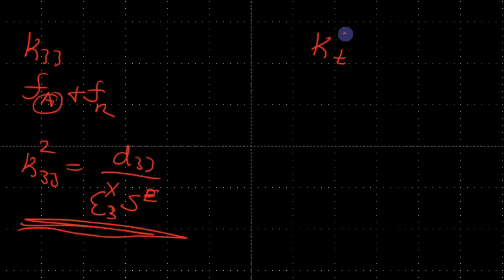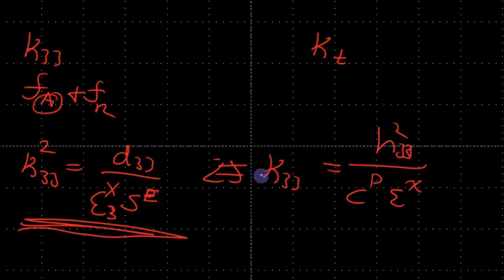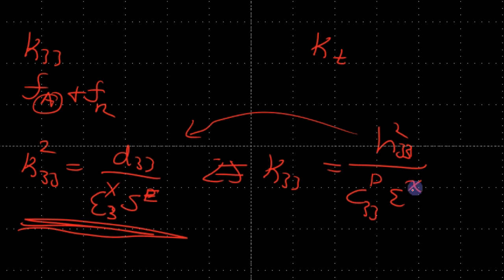However, for KT, the coupling factor is going to be H33 squared divided by C_D and the clamped permittivity — quite different from K33. These parameters don't directly correlate: you cannot describe H33 without using tensor properties, you can't describe C_D without tensor properties, and even for the permittivity you have to use tensor properties.